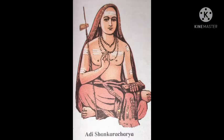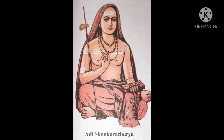Adi Sankaracharya lived during the 8th century CE. He emphasized knowledge and renunciation — renunciation meaning one no longer believes in something. He wrote commentaries explaining the Upanishads, Brahma Sutra and Bhagavad Gita. He established four maths in four directions of India at Badrinath, Dwaraka, Jagannath Puri and Sringeri.